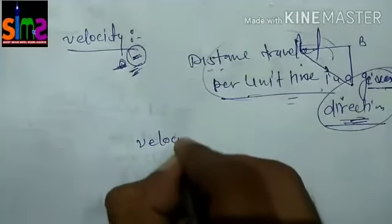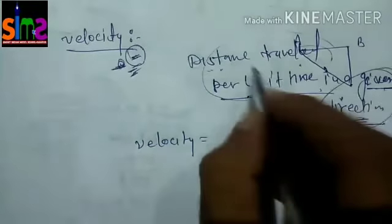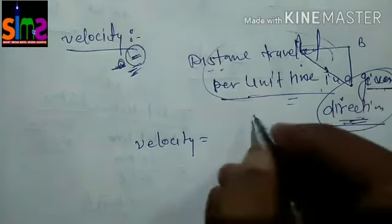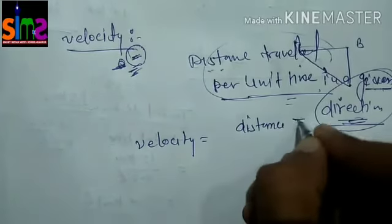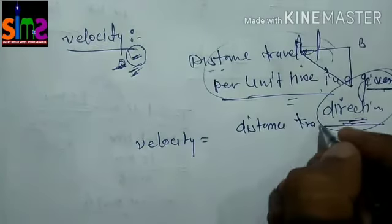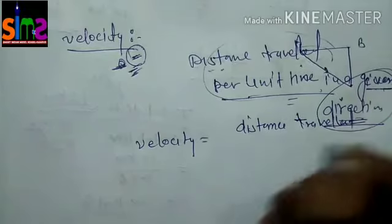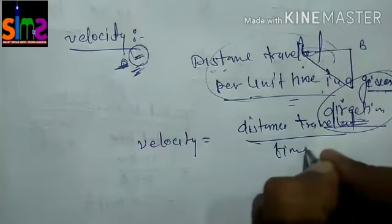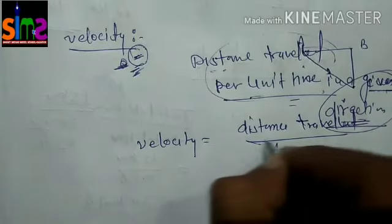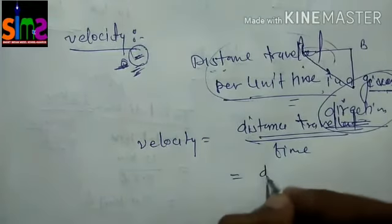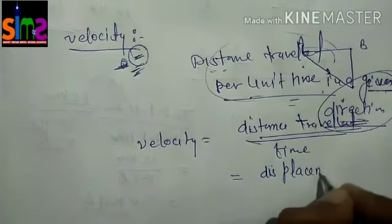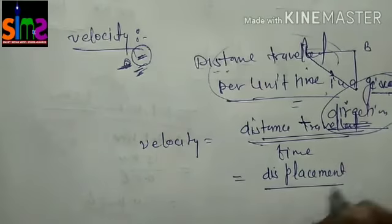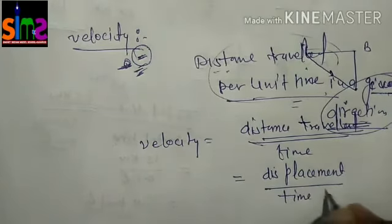So we define the formula. Velocity, that is distance travelled per unit time, or displacement upon time taken.